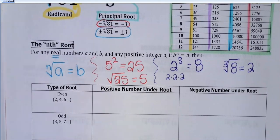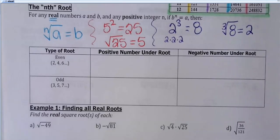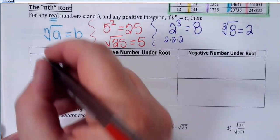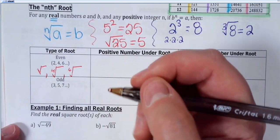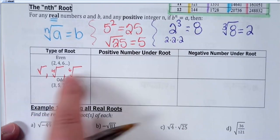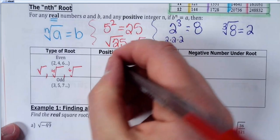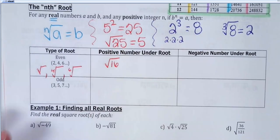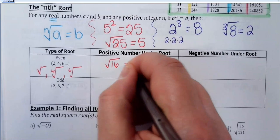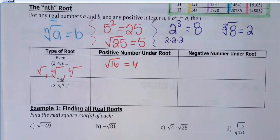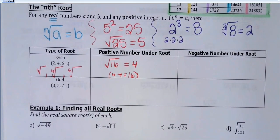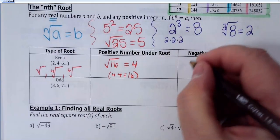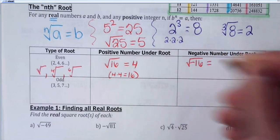I'm going to break these into two categories — we are only talking about real answers today. If you take an even root, like a square root, fourth root, or sixth root, and you have a positive number — so like the square root of 16 — that's equal to 4, because 4 times 4 equals 16. Now if you take the square root of a negative number: a square root means two numbers multiplied together giving that number underneath — what would you say for the square root of negative 16?